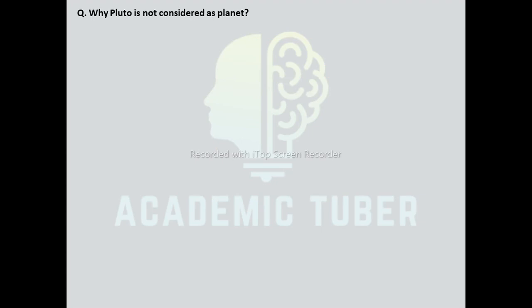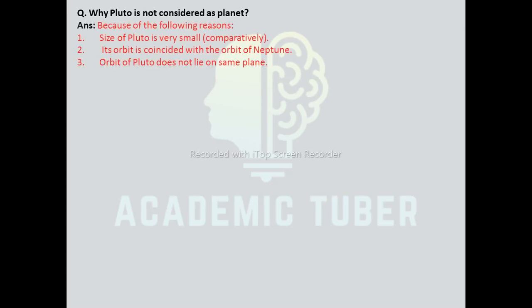Why is Pluto not considered a planet? Pluto is not considered a planet for the following reasons: first, the size of Pluto is very small comparatively; second, its orbit coincides with the orbit of Neptune; and third, the orbit of Pluto does not lie on the same plane. That is the reason Pluto is not considered a planet.